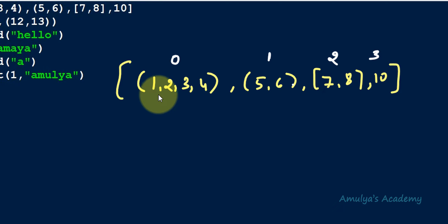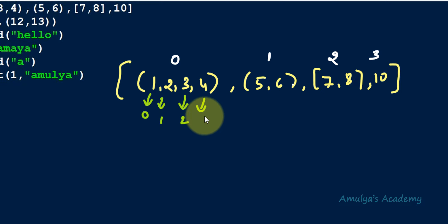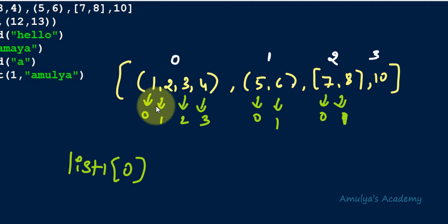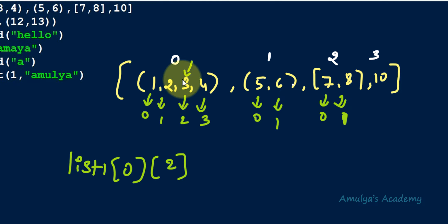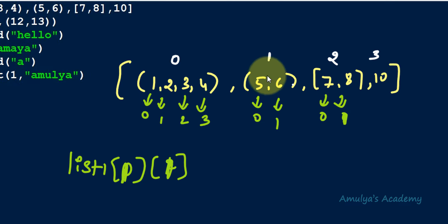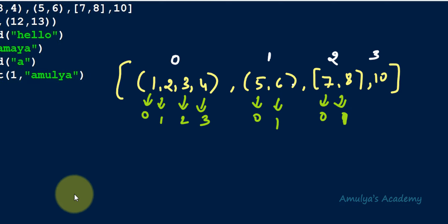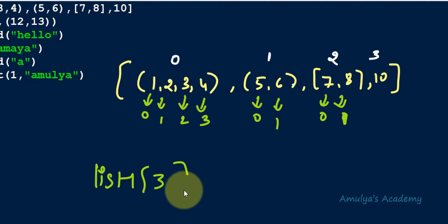For tuples present as elements of the list, we also need to use indices to access their inner values. For example, list1[0][2] gives the element at index 2 inside that tuple, and list1[1][1] gives 6. This is how nested lists or tuples inside a list work — you access them by chaining indices. You cannot write list1[3][0] because list1[3] is a number, not a sequence.